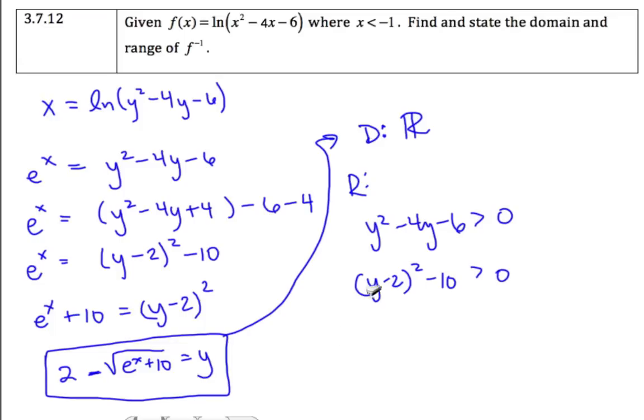Actually, since we're doing the domain of the original, let's keep it all in x's. So x squared minus 4x and x minus 2 squared minus 10 is greater than 0.